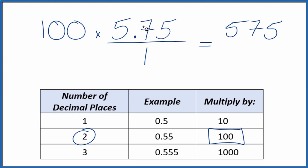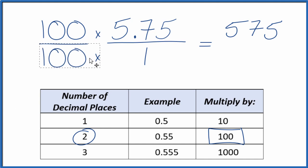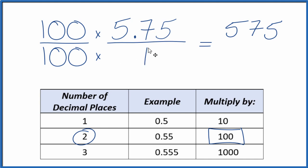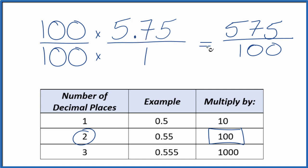But we can't just multiply the numerator by 100 — we need to also multiply the denominator by 100. That's because when we divide 100 by 100, it just equals 1. So we're multiplying this by 1; it doesn't change the value, just the way it's represented. So 100 times 1 is just 100. And now we have our fraction: 5.75 equals the fraction 575 over 100.